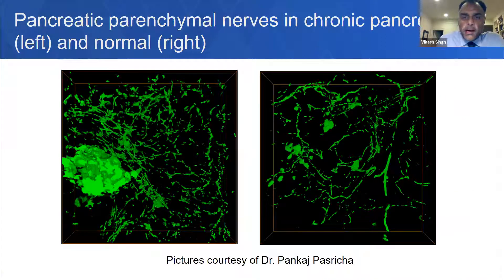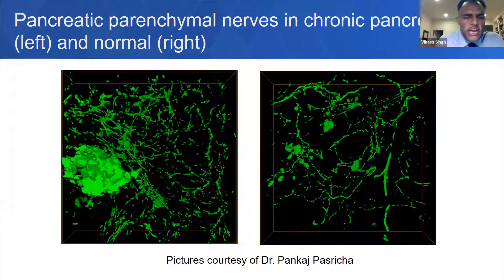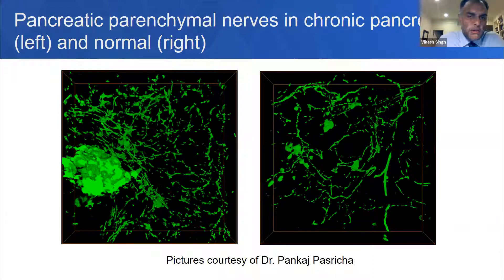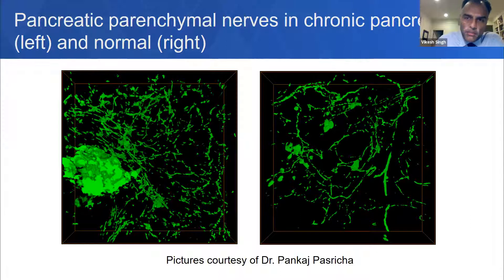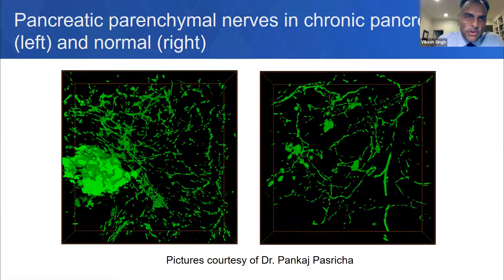When you look at the nerves in individual patients, you begin to see marked differences. Using a panneuronal staining marker known as PGP 9.5, there is a patient with chronic pancreatitis on the left who has an increased density and volume of pancreatic nerve fibers compared to a normal patient on the right, where the pancreatic nerves, while forming a lattice through the parenchyma of the gland, have a much lower volume and density.